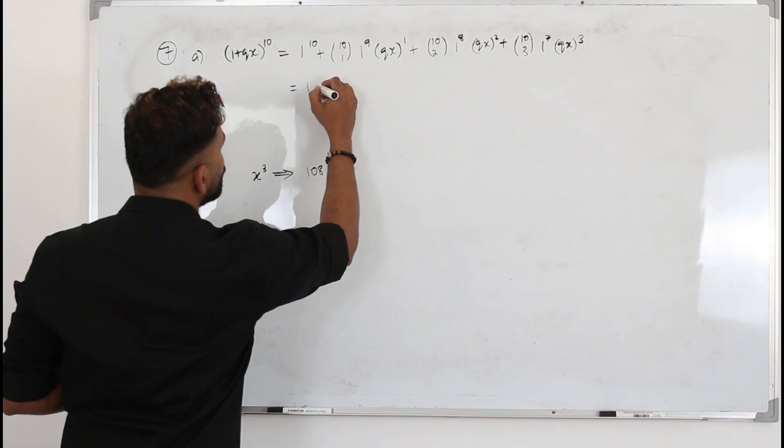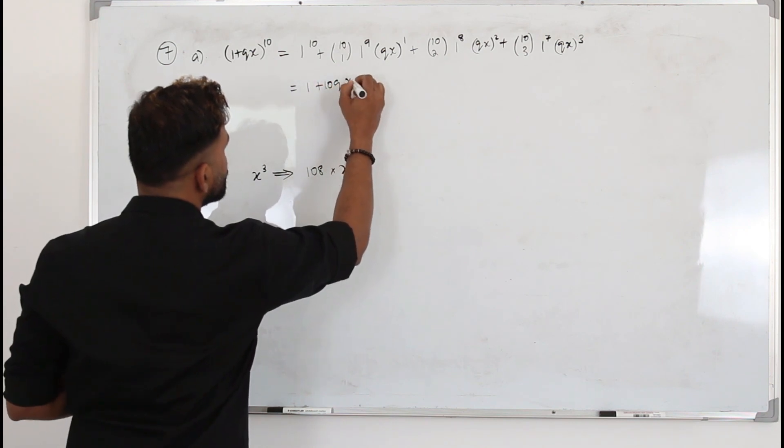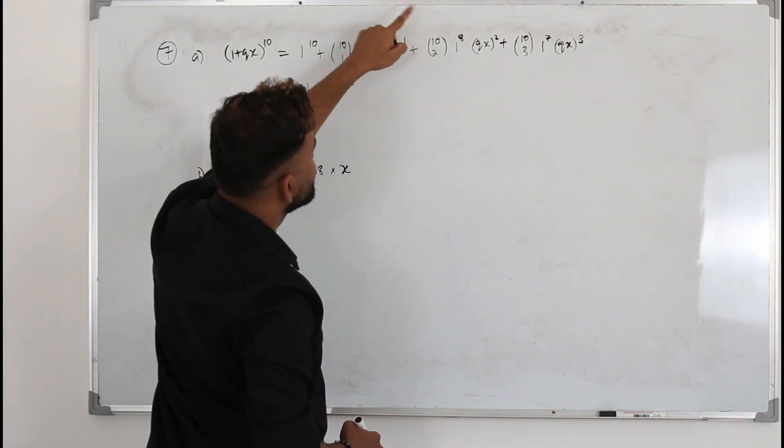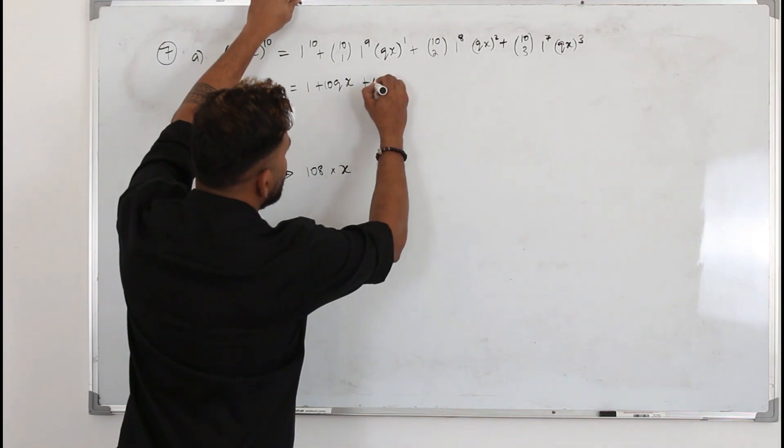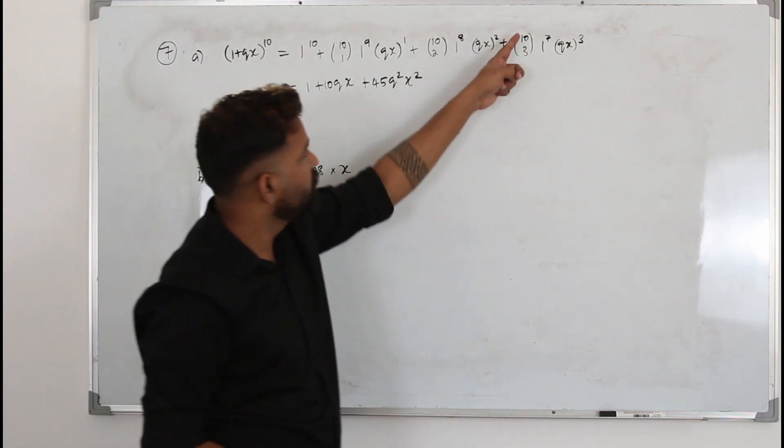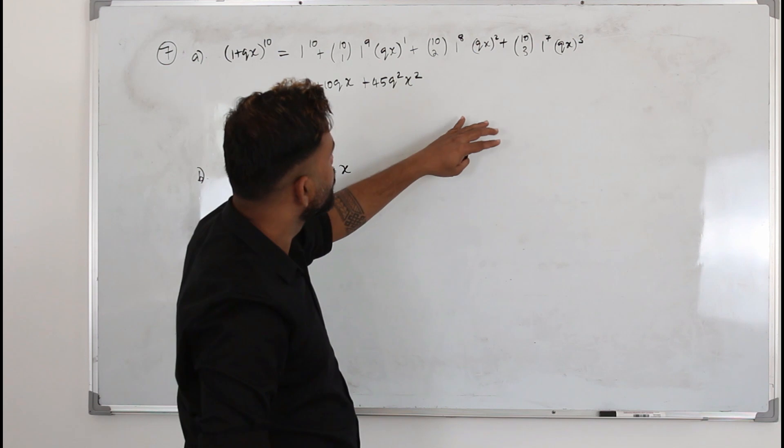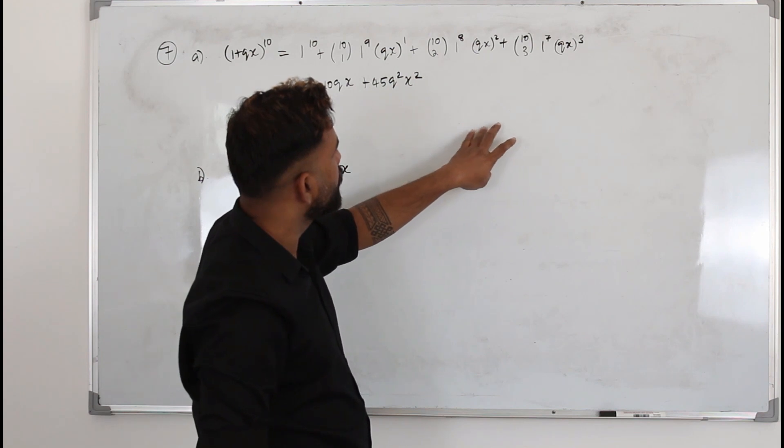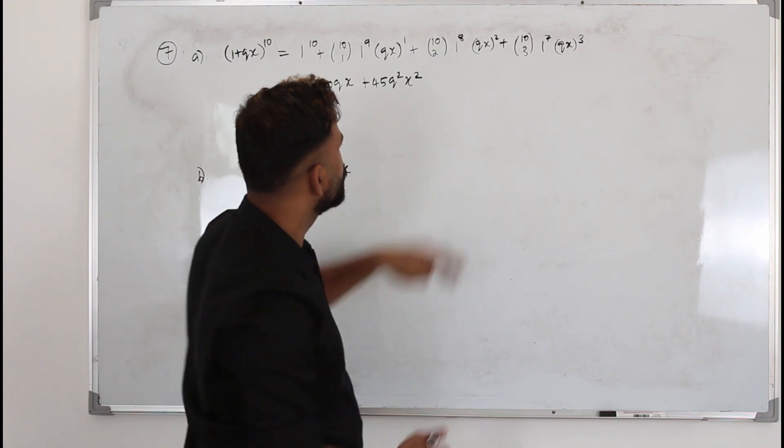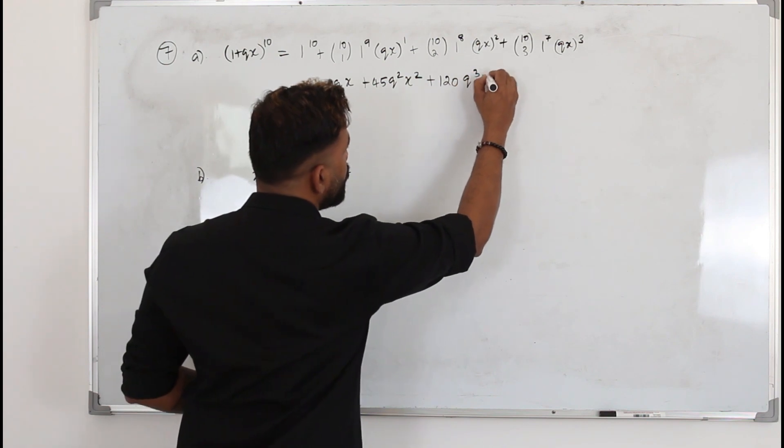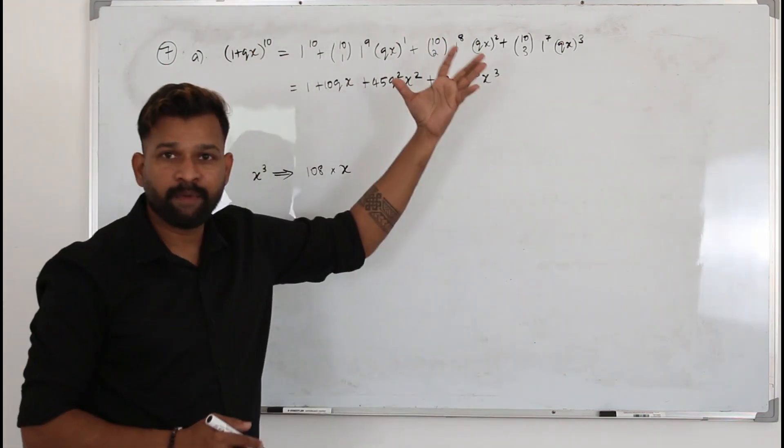Expanded: 1^anything is 1. 10C1 is 10, so 10qx. Because 1⁹ is also 1. 10C2 will be 10×9/2 = 45. You get 45q²x². And 10C3 will be 10×9×8/6, which is 120. 120q³x³. If I am not wrong, double check with your calculator please. So that's the expansion. That's all.